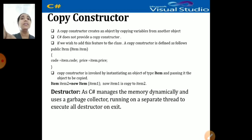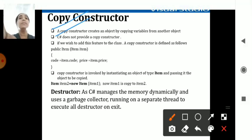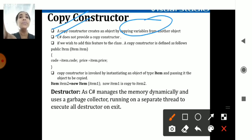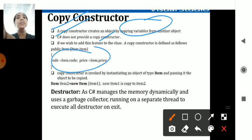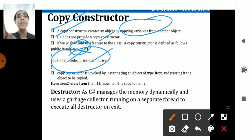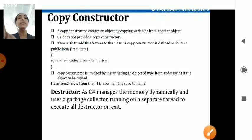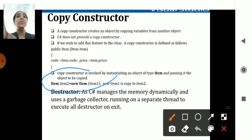The copy constructor copies data from one part to another. When an object is created, the value stored in one constructor can be copied to another variable. Using the Item class, you get code as item.code and price as item.price. In the copy constructor, you pass the value of item1 into item2 — you are copying the value of item1 into item2.